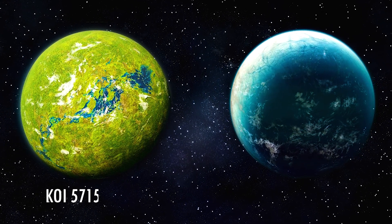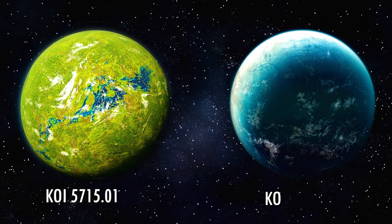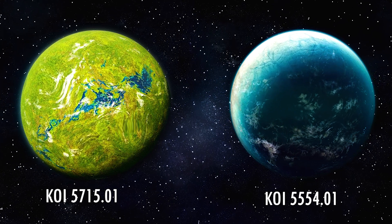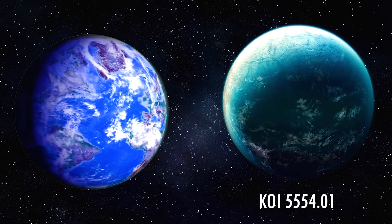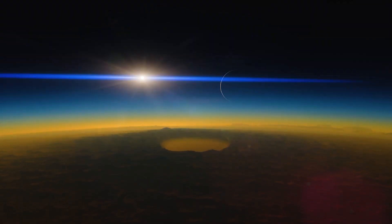KOI 5715.01 and KOI 5554.01. The second of the two planets looks exactly like Earth, which is a fascinating discovery. These planets are perfect in themselves and meet every condition required to support life, making them prime candidates for human habitation.